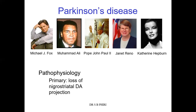The primary pathophysiology of this disease is loss of nigrostriatal dopaminergic projections. From the substantia nigra — the substance that appears black — dopaminergic neurons project to the striatum, the corpus striatum, specifically to the putamen and the caudate nucleus. From there, they facilitate the function of the direct pathway and inhibit the function of the indirect pathway.